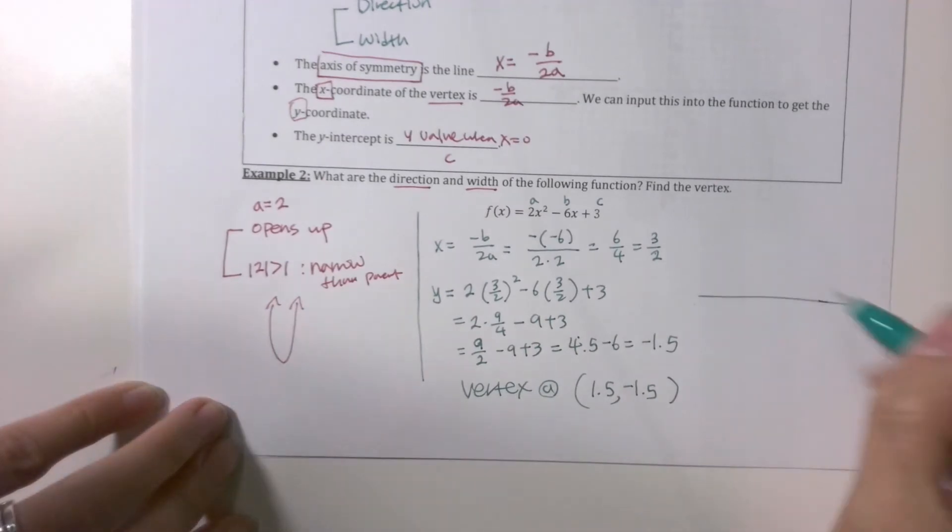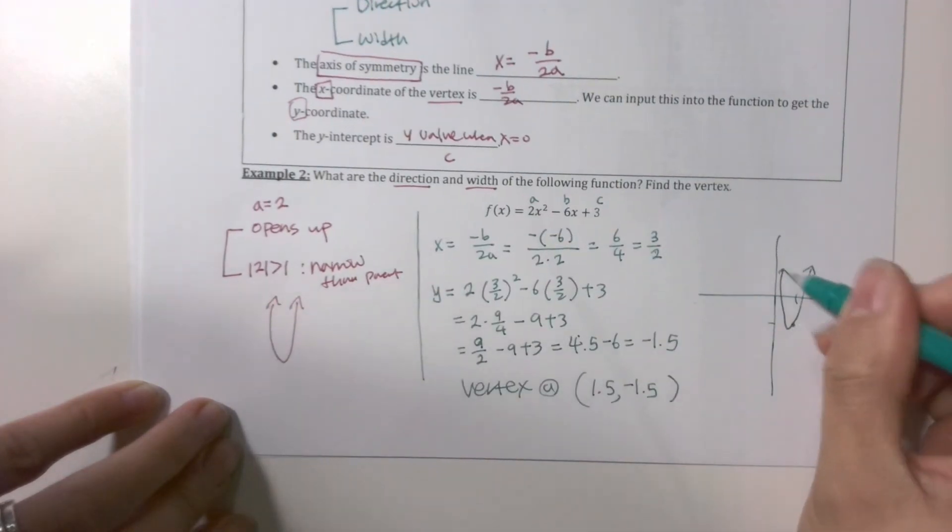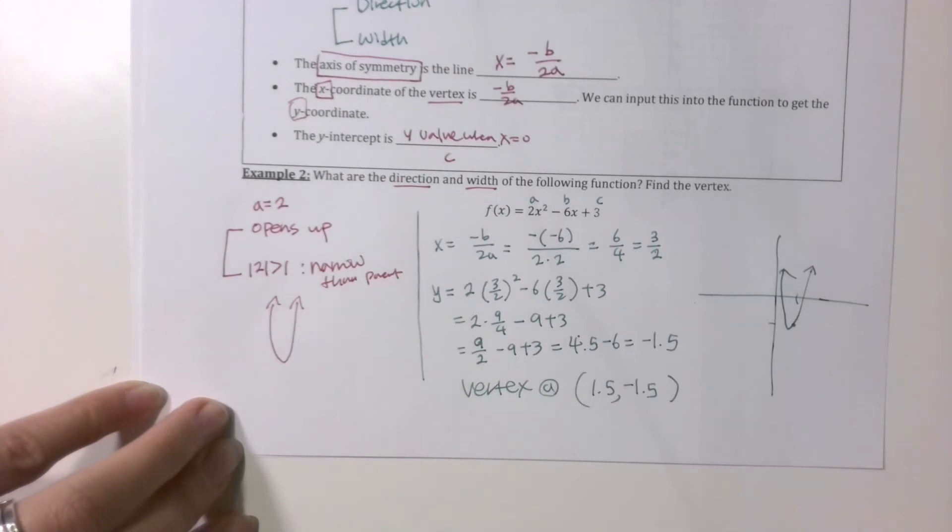Cool? So if you were to actually sketch it, it's going to be 1.5 comma -1.5. Opens up narrower than the parent, something like this. Okay? Alright, let's keep going.